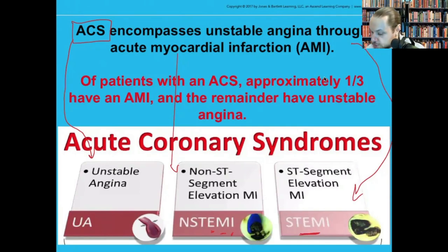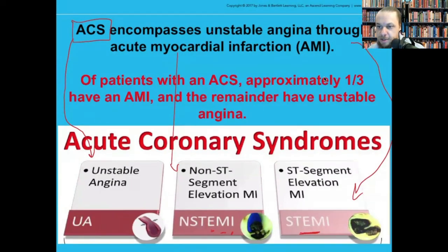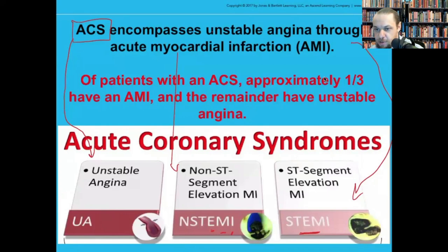There's another term called stable angina, and stable angina is not part of ACS. Stable angina is a state where a person does some sort of physical exertion and chest pain is brought on during that activity. When they rest and relax, the chest pain goes away. For example, a guy walks up three flights of stairs, develops ischemic chest pain radiating to his left arm or jaw, then sits down and the pain goes away — or he takes nitroglycerin and the pain goes away.